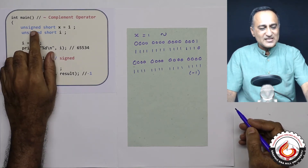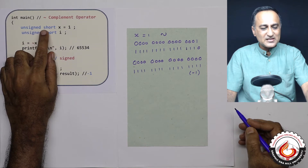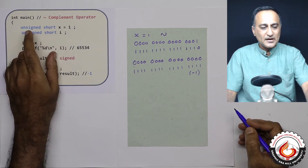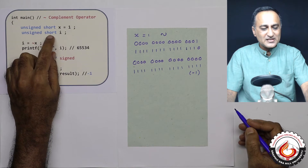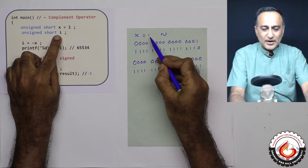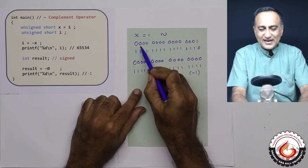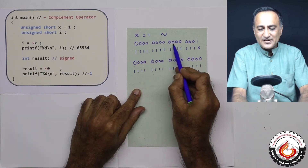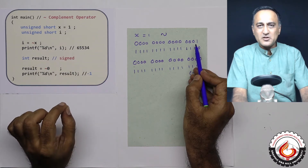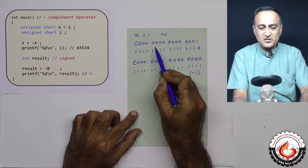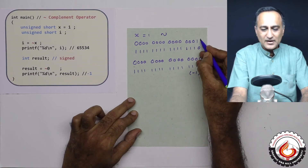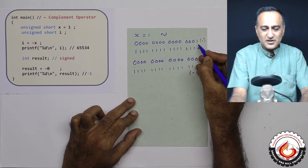I have defined a variable unsigned short x equal to one. I have defined another variable unsigned short i, and I have not given it any value. x is one, and internally x is represented in 16 bits like this, since I'm assuming on my machine short is going to be 16 bits or two bytes. This is the representation of one.